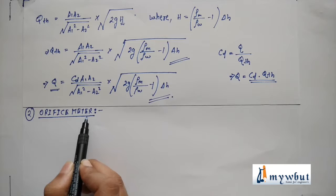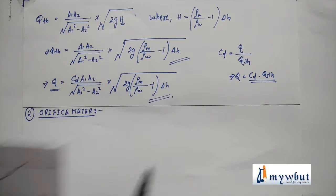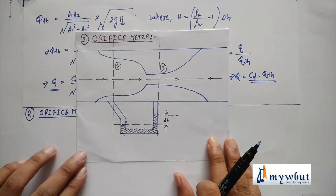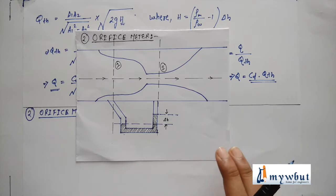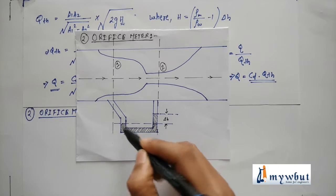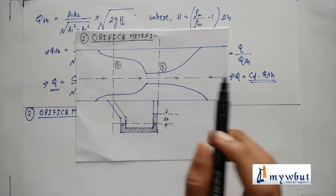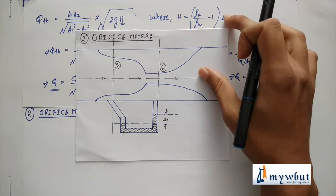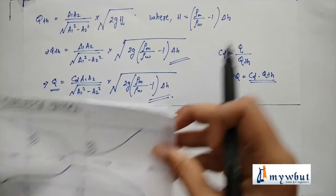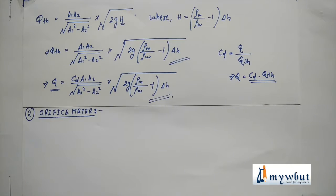Number two is the orifice meter. This is how the orifice meter looks like, this is the U-tube manometer fixed below it, and this is the throat area. As the previous derivation we have already done, this is almost the same as the previous derivation for the venturimeter.